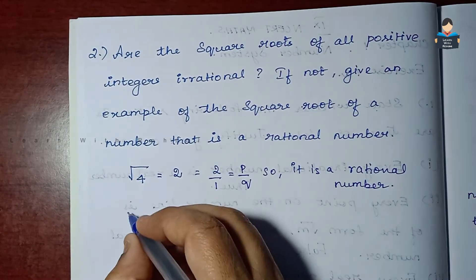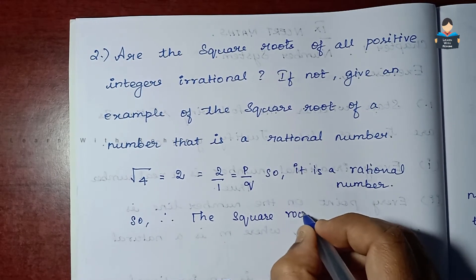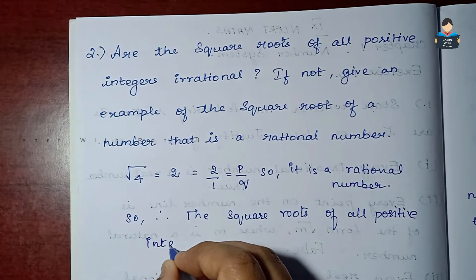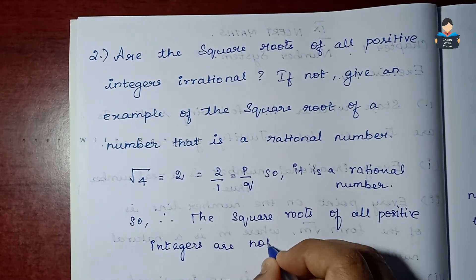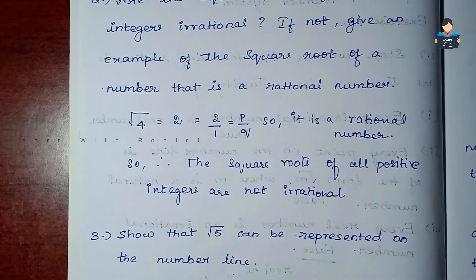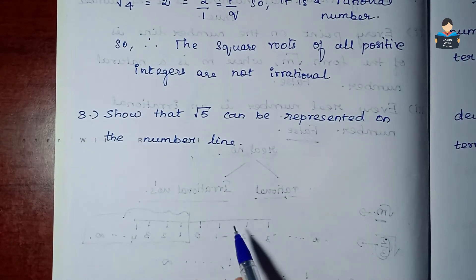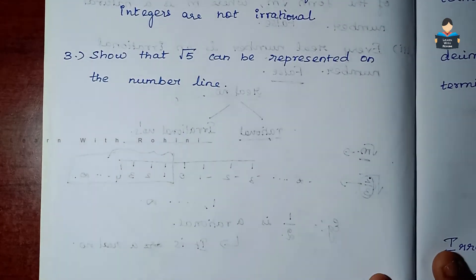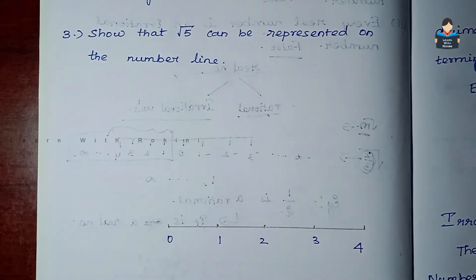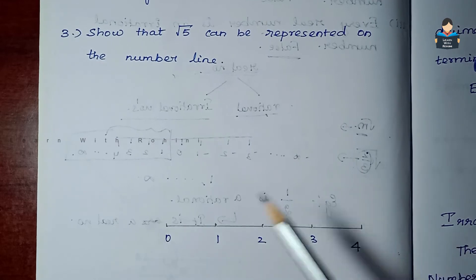The third question asks us to show that √5 can be represented on the number line. We will represent √5 on the number line. First, we mark 0 and then mark units on a scale so the picture is more visible. We represent 0 to 2 units on the number line.